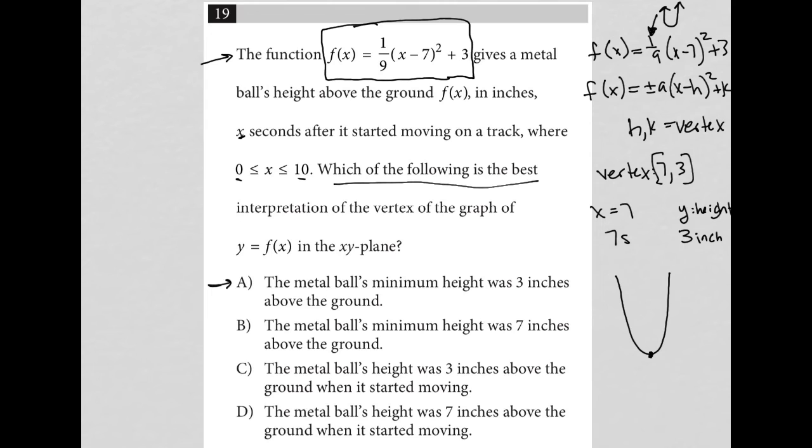Choice B: The metal ball's minimum height was seven inches. No, seven has to do with time, not height. Choice C: The metal ball's height was three inches above the ground when it started moving. No, when it started moving would be x equals zero—that would be zero time, not at seven seconds.